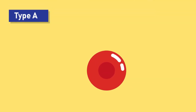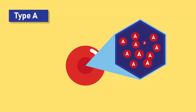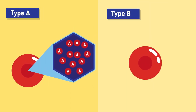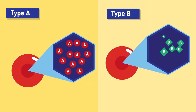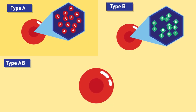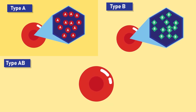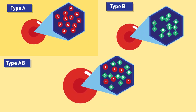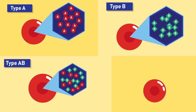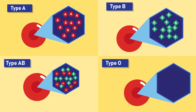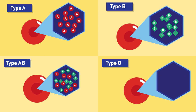Blood type A — if the red blood cell has only A molecules on it. Blood type B — if the red blood cell has only B molecules on it. Blood type AB — if the red blood cell has a mixture of both A and B molecules. Blood type O — if the red blood cell has neither A nor B molecules.